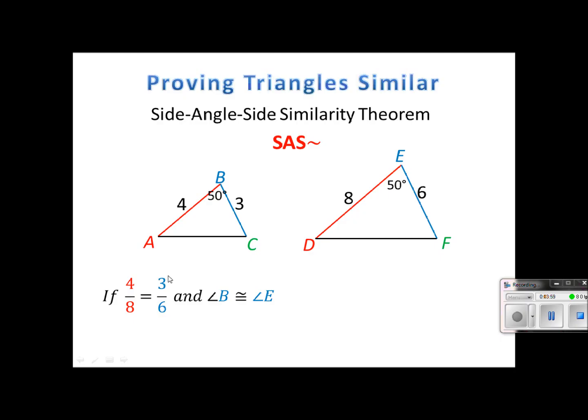If they have the same scale factor, so if I reduce this, it would be 4 over 8 is 1 half, 3 over 6 is 1 half and B and E are clearly congruent. They're both 50 degrees and I've reduced that here. Then that's enough to show that these two triangles are similar. So triangle ABC is similar to triangle DEF by the side angle side similarity theorem.